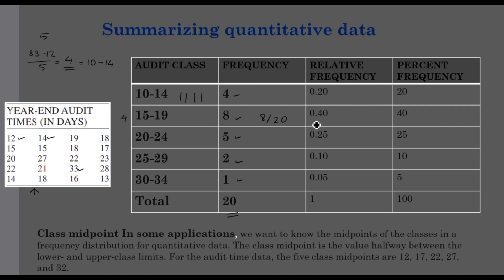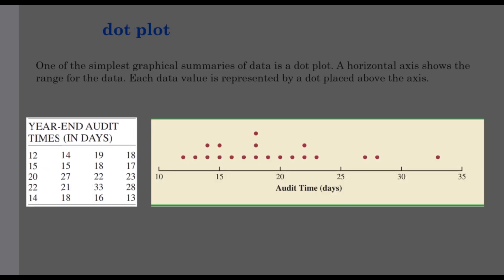We are multiplying the relative frequencies by 100, giving percent frequencies of 20, 40, 25, 10, and 5. The midpoints of each class are calculated as the lower and upper limits added and divided by 2. So the midpoints are 12, 17, 22, 27, and 32. When we are calculating the mean using quantitative data, we will use these midpoints. So if you have quantitative data, we can graphically represent it using tools like a dot plot.